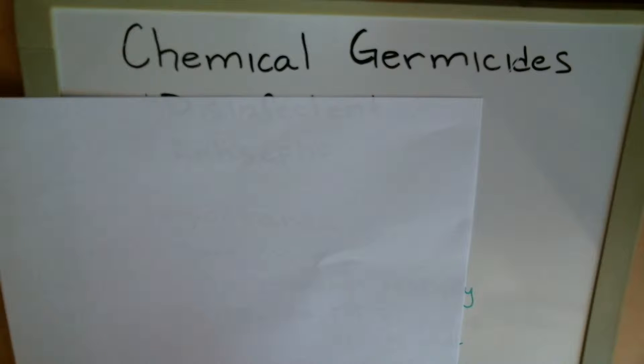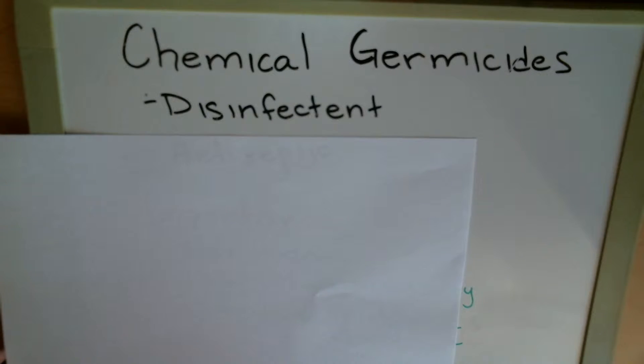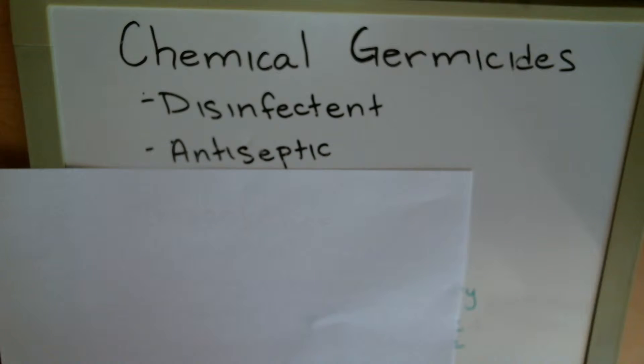Hi everyone. In this video we're going to go over your physical and chemical controls. First up, we have our chemical germicides. We have two kinds: disinfectants and antiseptics.